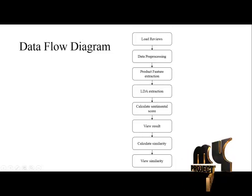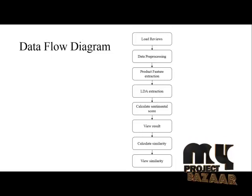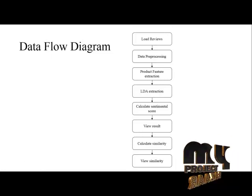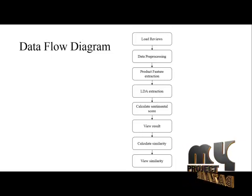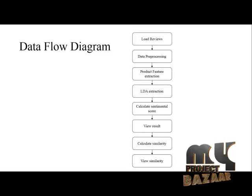Then we have to do data pre-processing. In data pre-processing, we have to eliminate the stop words. After eliminating the stop words, we have to extract the product features from the user reviews. After extraction, we have to extract the LDA score. This LDA score is a topic discussion about the product by the users — which user, about which product, and which topic was most discussed.